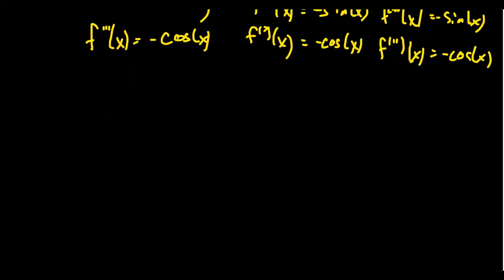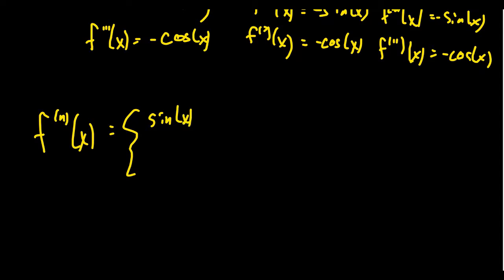So what I'd like to do is summarize what we just have seen. If we want to take the nth derivative of sine of x, you're going to get four basic options. You'll get sine of x whenever n is a multiple of four — like the zeroth, fourth, eighth, and twelfth derivatives. You'll get cosine of x whenever n is a multiple of four plus one — like one, five, nine, thirteen.